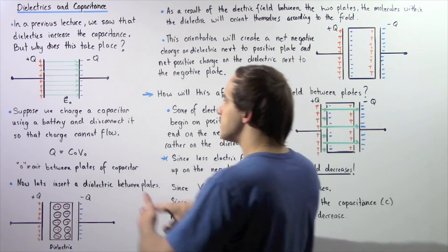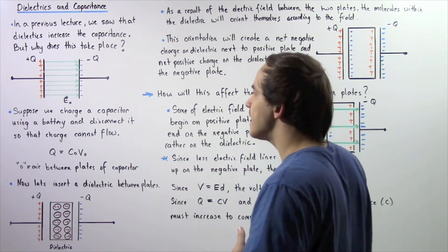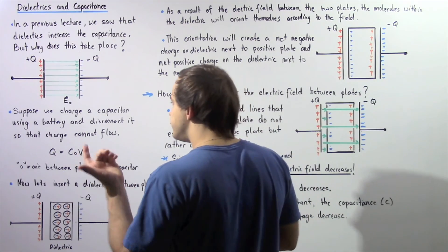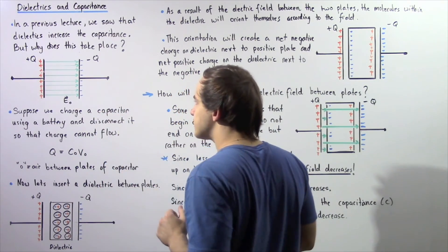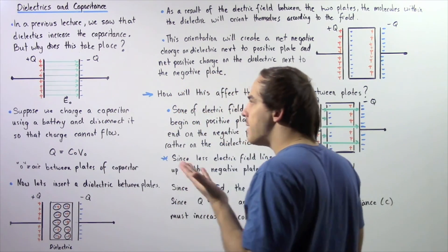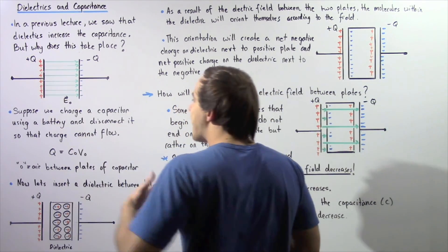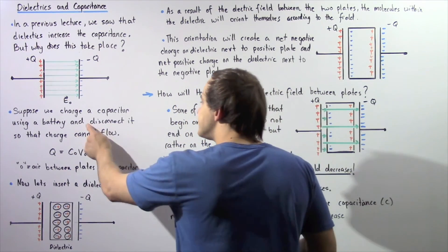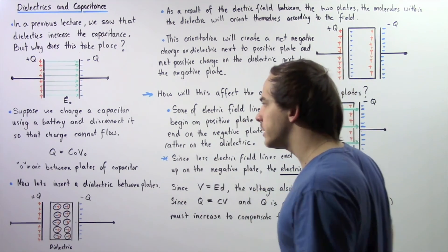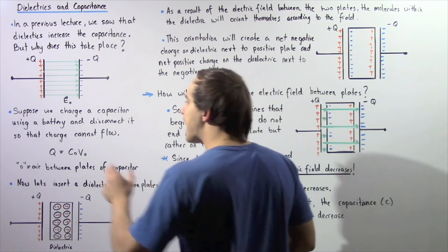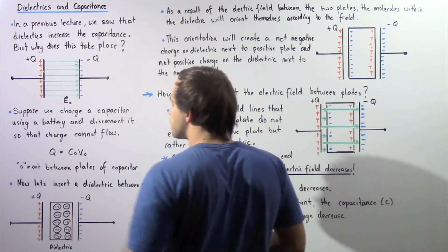So let's suppose we have the following parallel plate capacitor. We essentially take a parallel plate capacitor as shown, use a battery to charge our capacitor, and then we disconnect the battery from our electric circuit so that charge cannot leave our plates.